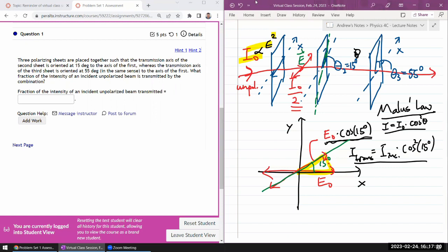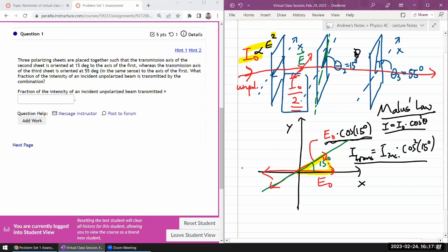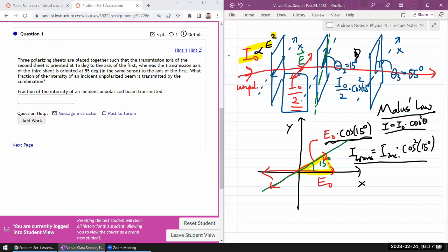After the second filter, let me keep track of the full expression. The incident intensity for the second filter is I_naught over 2, so transmitted at the second filter should be I_naught over 2 times cosine squared of 15 degrees.